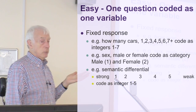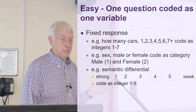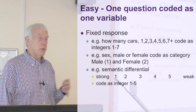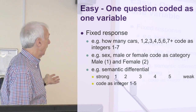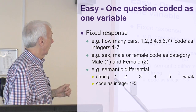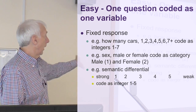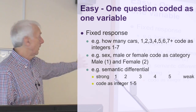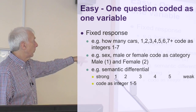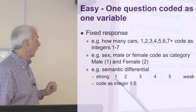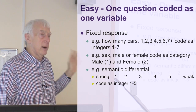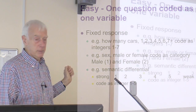The easiest case is where we don't have to do that — the fixed response questions. How many cars, we code as integers one to seven if those are the categories. Sex: one and two. I've dealt with these already — it's a matter of a differential where they ring a number between the strong and the weak, and we put that number in. That's dead easy. One variable, one question.